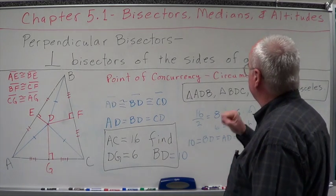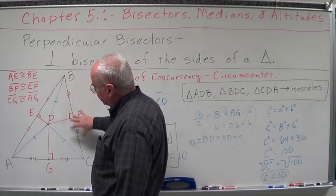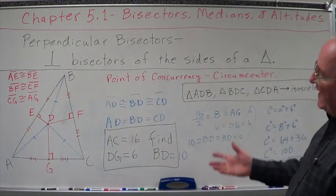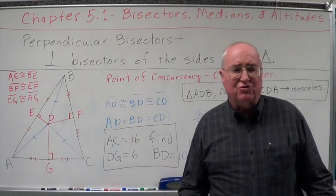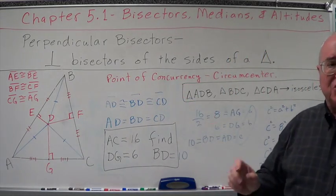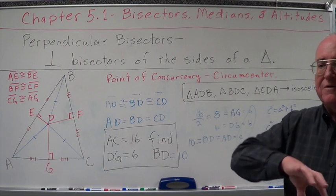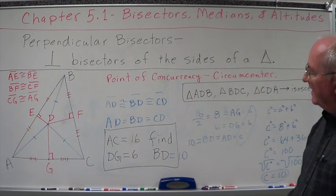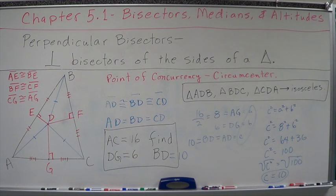One little side note before moving on — I encourage you to explore all of the congruencies in this. Explore what happens if we have an equilateral triangle, a right triangle, an acute triangle, or an obtuse triangle with perpendicular bisectors. Use a geometer's sketchpad or similar software to create these dynamically, move and shape the triangle any way you want to see what happens. What's going to happen when it's equilateral? Explore those congruencies and concepts.